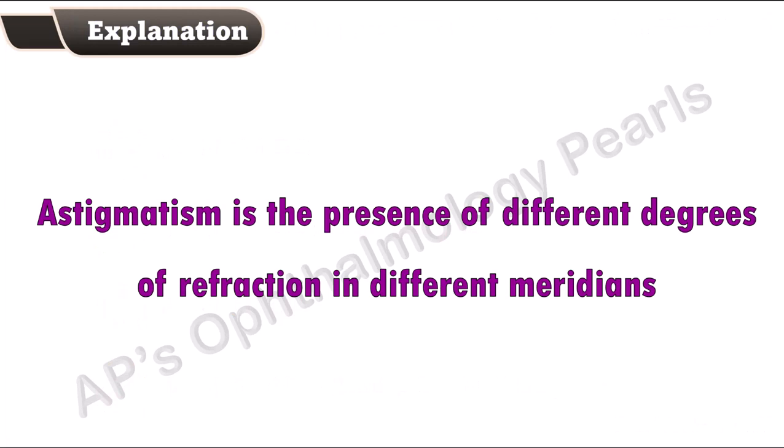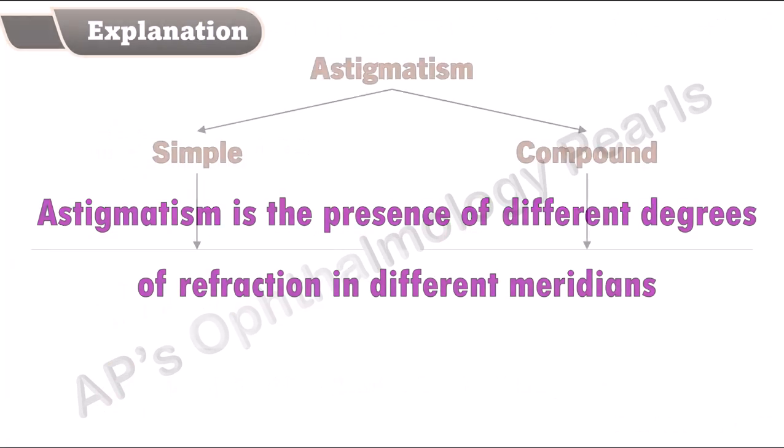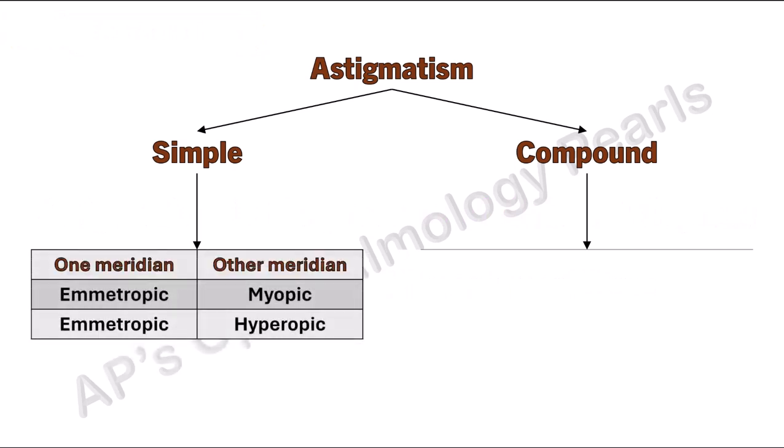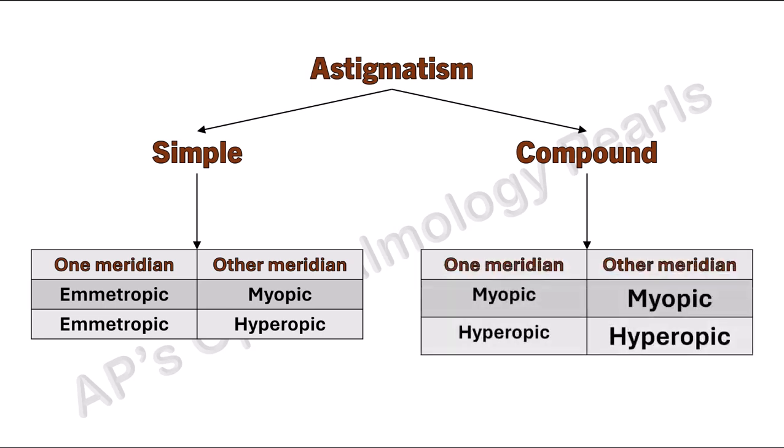Astigmatism is the presence of different degrees of refraction in different meridians. Simple astigmatism is where one meridian is emmetropic and the other is either myopic or hypermetropic. In compound astigmatism, both meridians are either myopic or hyperopic but to different degrees.